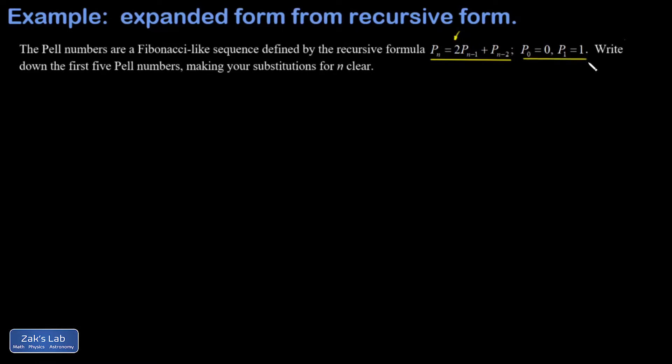We want to get the first five Pell numbers, so we'll start making our list. We've got P_0 equals 0, P_1 equals 1, and then all we have to do to generate more of these numbers is sub in different values of n.